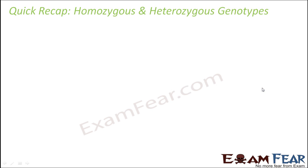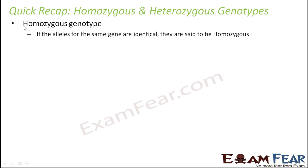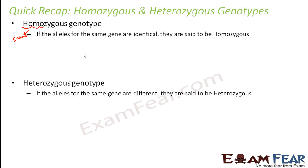When we talk about genotypes, it becomes important to talk about homozygous and heterozygous. If both alleles in a genotype are identical, it is a homozygous genotype — the word 'homo' itself means same or uniform. If they are different, it is heterozygous. So capital T, capital T is homozygous; small t, small t is again homozygous; whereas capital T, small t is heterozygous.